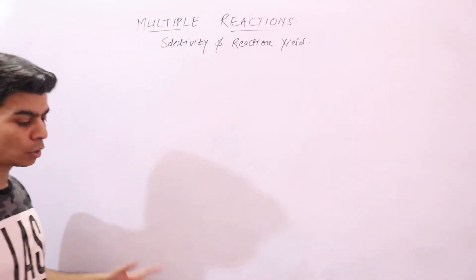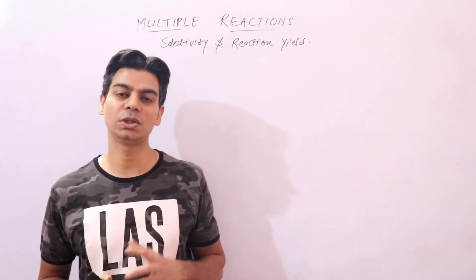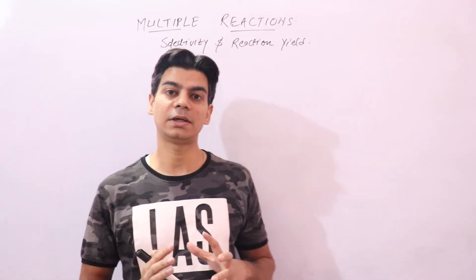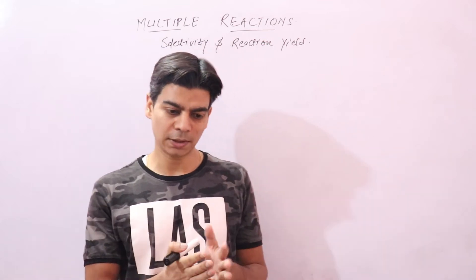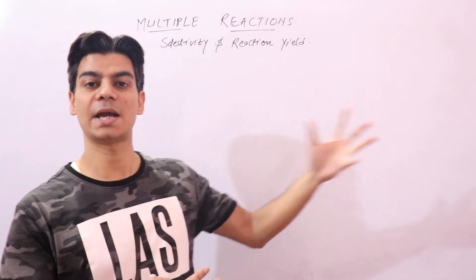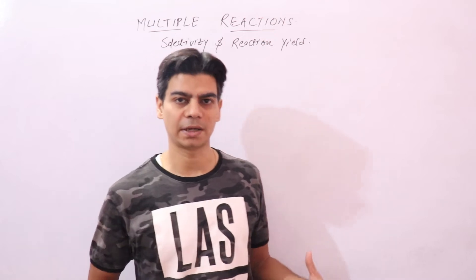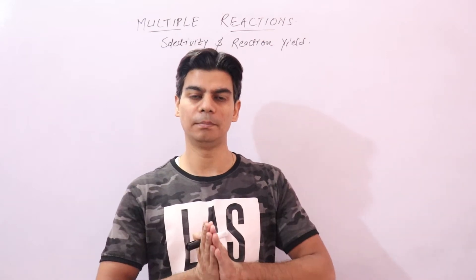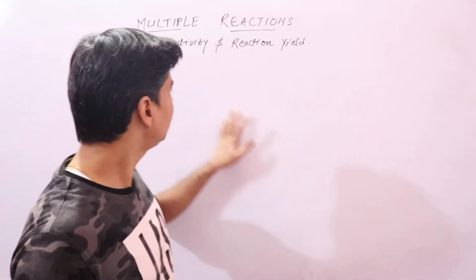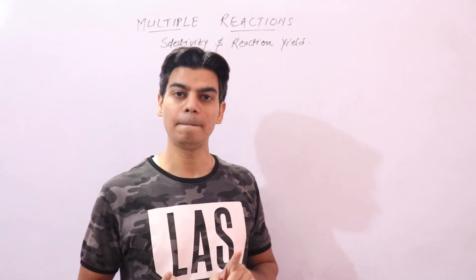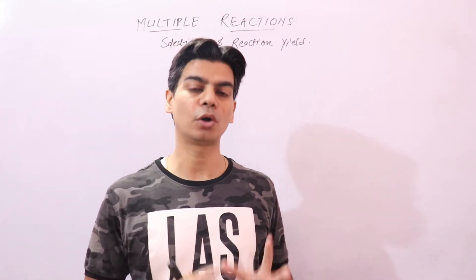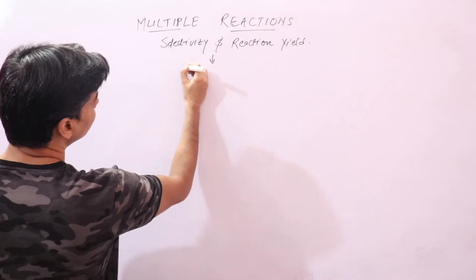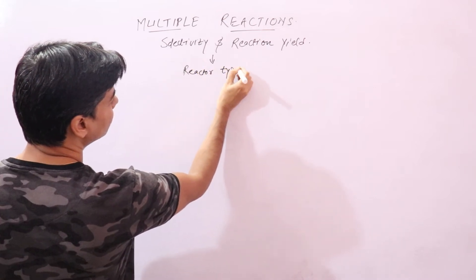Once you know the selectivity and reaction yield, you can decide on the reactor type — what type of reactor you should use so that you can have maximum desired product and minimum undesired product. The more desired product you have, the more beneficial it would be. Selectivity and reaction yield will help you determine what type of reactor to use and what reaction conditions to apply.